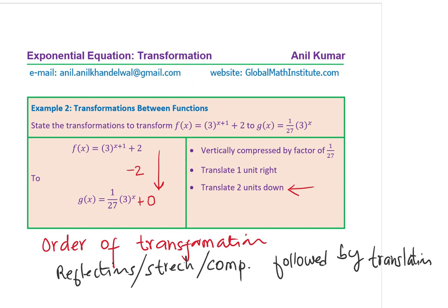Looking at the exponent: when we have x plus 1 in f(x), the function was 1 unit to the left. Since g(x) has just 3 to the power of x, you move right by 1 unit — so translated 1 unit right. The last part is the vertical stretch factor: previously 1, now it is 1/27, meaning we compress by a factor of 1/27. So in order: vertically compressed by a factor of 1/27, translated 1 unit right, and translated 2 units down.